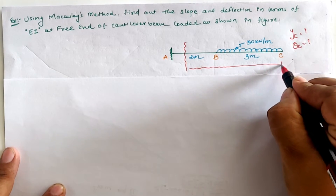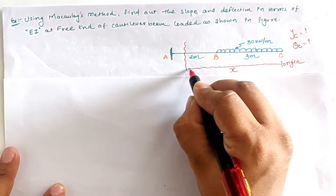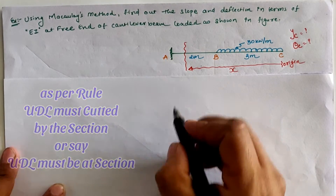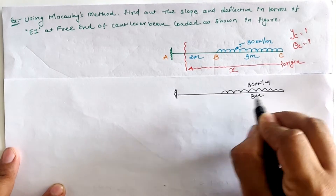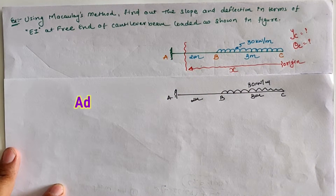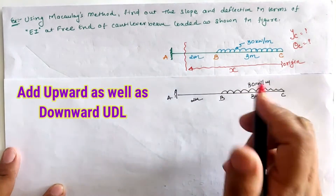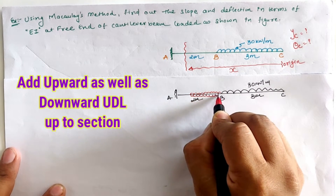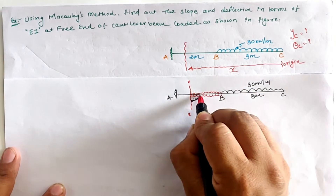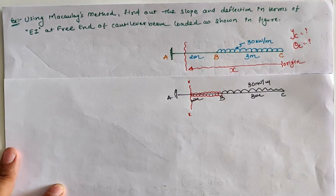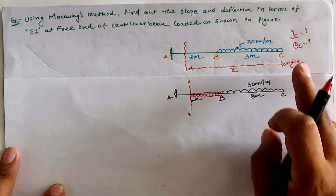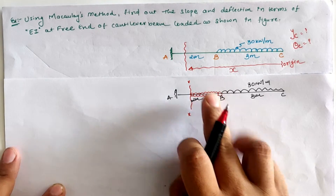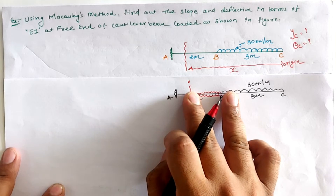The distance from location C is x meters. According to the rule, we have to cut the UDL with the section, so we extend the value of UDL up to the full span. The same amount is then deducted so that our section is cutting a UDL of 30 kN/m. For the cantilever beam with origin at the right-hand side, we apply a positive UDL and a negative UDL between A and B up to the section.